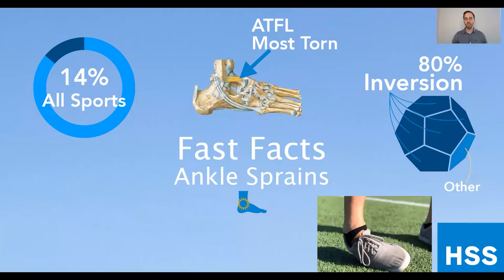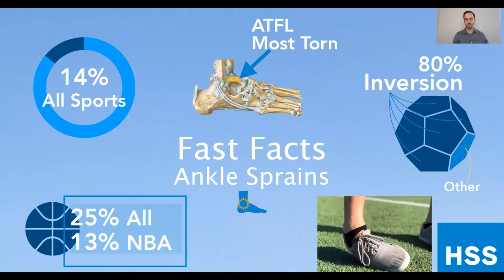Ankle sprains account for about 14% of all sports-related injuries. When we hone in on basketball, the rate is very high — in the general population, 25% of all basketball injuries are ankle sprains. And even in high-level NBA athletes, 13% of those injuries are ankle sprains.